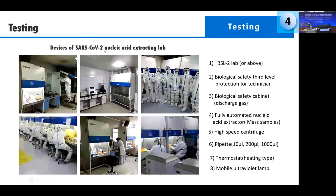For the SARS-CoV-2 nucleic acid extraction lab, we need a BSL-2 or BSL-3 laboratory with biological safety level 3 protection for technicians, and a biological safety cabinet with exhaust gas discharge. A fully automated nucleic acid extractor is used for mass samples. We also need a high-speed centrifuge, pipettes of 10, 200, and 1000 microliters, a thermal block for heating, and a mobile ultraviolet lamp for disinfection.